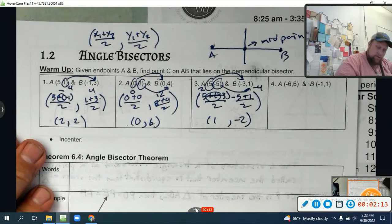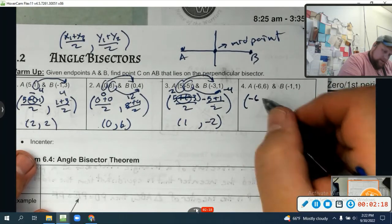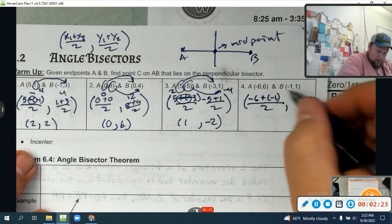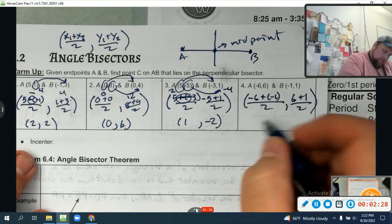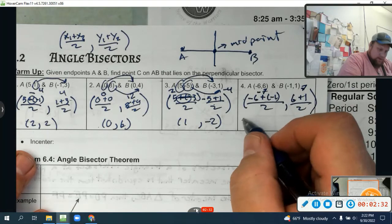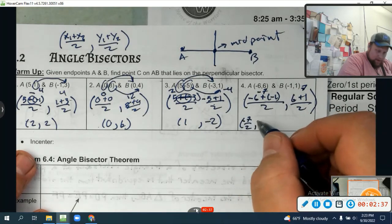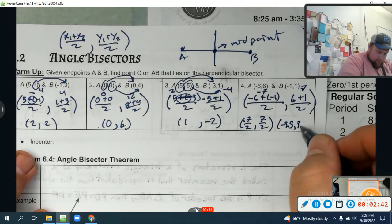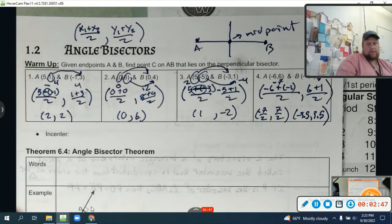And negative 5 plus 1 is negative 4, negative 4 divided by 2 is negative 2. It works for negatives as well. Then our last one is just going to be negative 6 plus negative 1 all over 2, and 6 plus 1 over 2. That's negative 7 halves and 7 halves, or negative 3.5, 3.5. All right, there we go. Pause it, look at it, check it out.